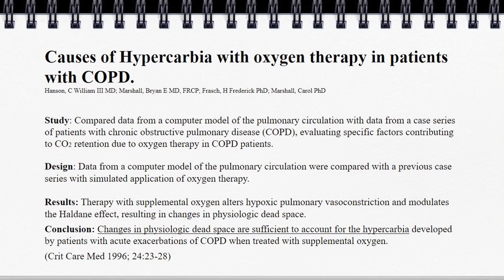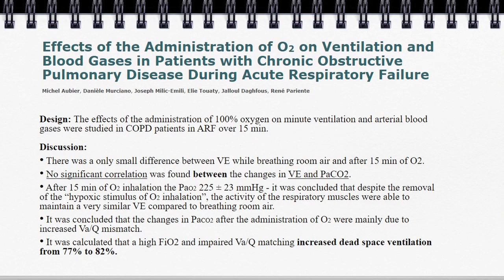Another study by Hansen used a computer model of pulmonary circulation to tease out the different factors contributing to hypercarbia in COPD. Through manipulating hypoxic pulmonary vasoconstriction and the Haldane effect, they found that changes in physiologic dead space are sufficient to account for the hypercarbia developed in acute exacerbations of COPD. Returning to Obier's second study: the CO2 jumped from around 50 to 80 while minute ventilation didn't change much, and they attributed this to VQ mismatch — dead space ventilation increased from about 77 to 82%.